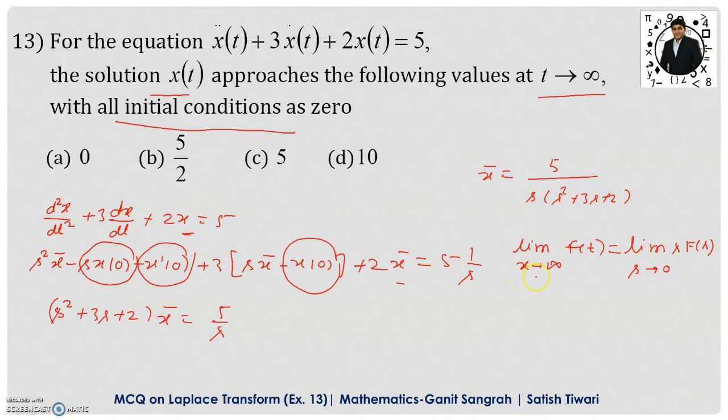What is the final value theorem? It is limit t tending to infinity f(t) equals limit s tending to 0 of s·f(s). Here we have to find the LHS part. For that we will find the RHS part because the function of s is already given. We just put s here and then take the limit when s tending to 0.